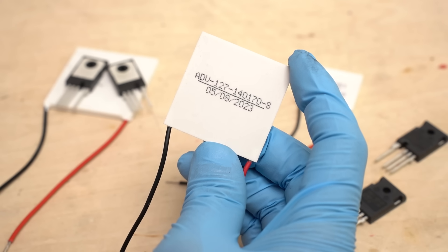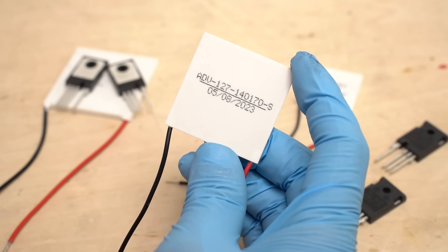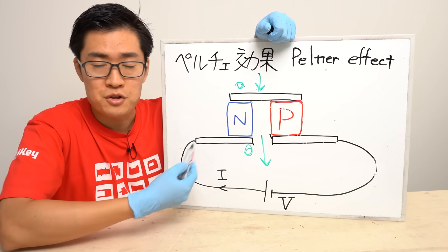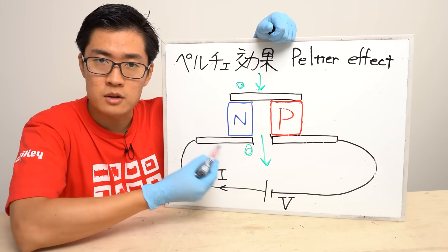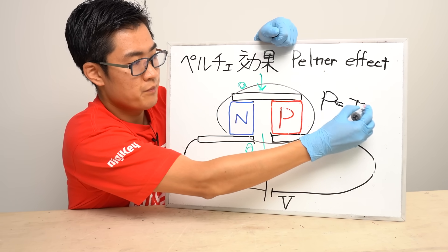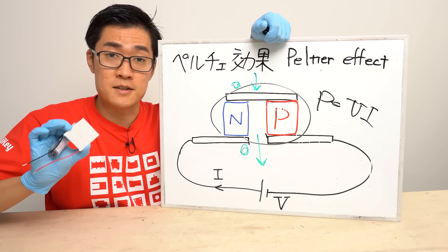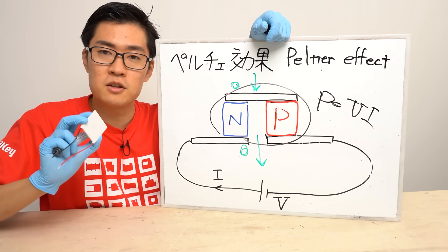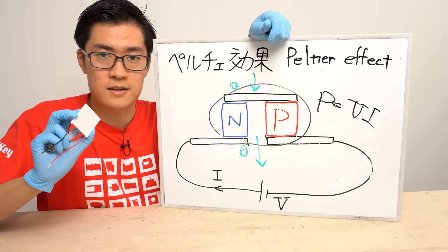There's one thing you need to be careful about when using Peltier devices: they generate heat themselves. To operate a Peltier device, a current must be passed through it, and that power is calculated by P equals VI. The Peltier device generates heat equivalent to that power. So using Peltier devices for cooling requires cooling the Peltier devices themselves.